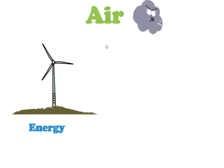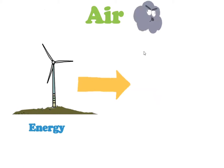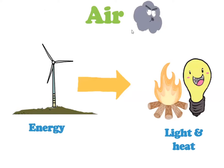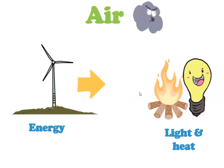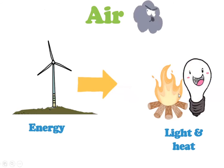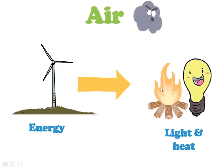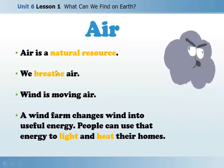The first natural resource is air. The air makes the windmill spin. The windmill gives us energy — light and heat. The air flows, the windmill turns, and the windmill gives us energy to make light and heat for us at home, like the light at home and the heat when we're feeling cold. So this is about the air.